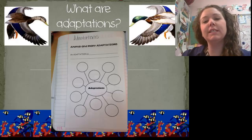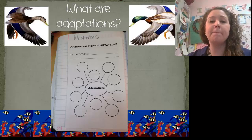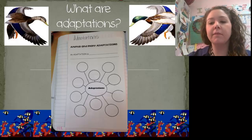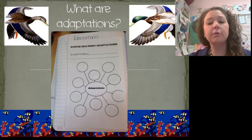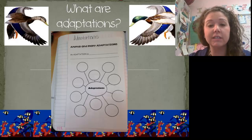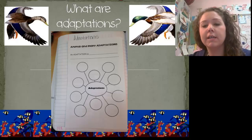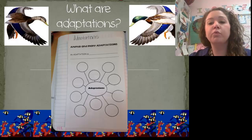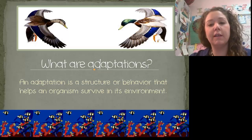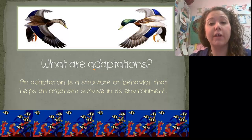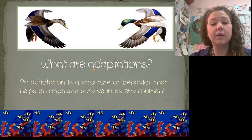Hello students, today we are going to learn about adaptations. Some of you are more familiar with it than others, but we want to make sure that we understand exactly what an adaptation is and some examples we find in organisms. Remember, an organism is a living thing such as a plant or an animal. You have your handout — fold it and glue it on page 108. Let's write down the definition of an adaptation in the blank spot up top, and whenever I talk about an adaptation, you're going to put the word in the little bubble.